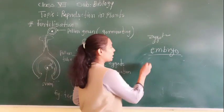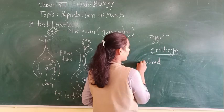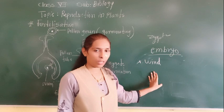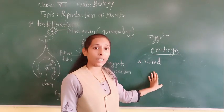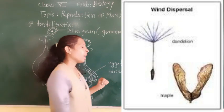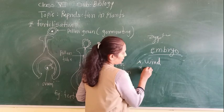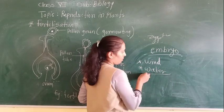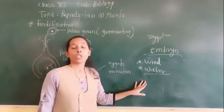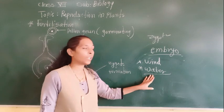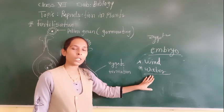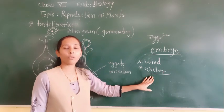Seeds can be dispersed with the help of wind — these seeds are very light and have feather-like light structures on them, so they can easily move. Seeds that are dispersed with the help of water — a well-known example is coconut — have a fibrous coating over them, which helps them move along with water streams.